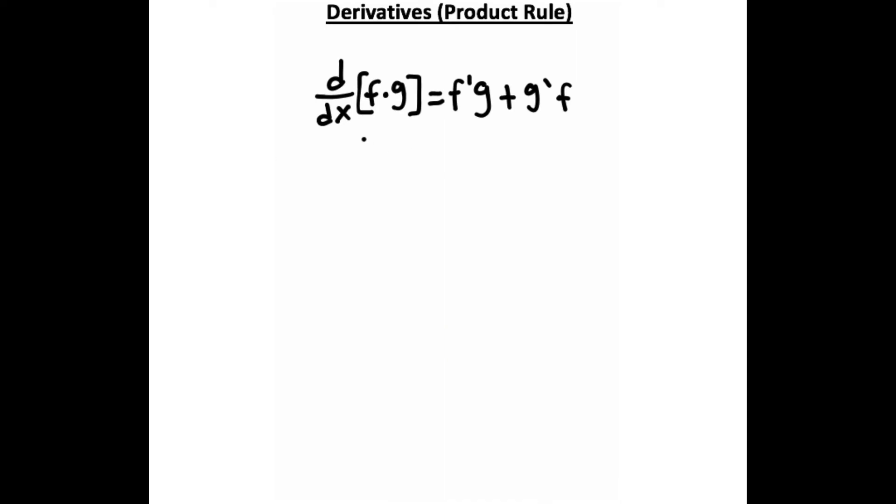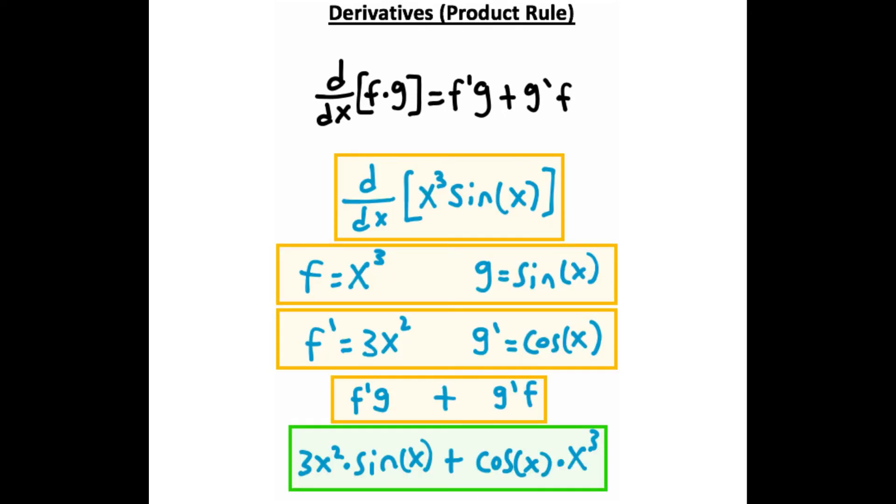We also need to talk about the product rule. The product rule happens when you have two functions being multiplied. The product rule works by taking the derivative of your first term times your second term plus the derivative of your second term times your first term. Here is a worked out example of the product rule.